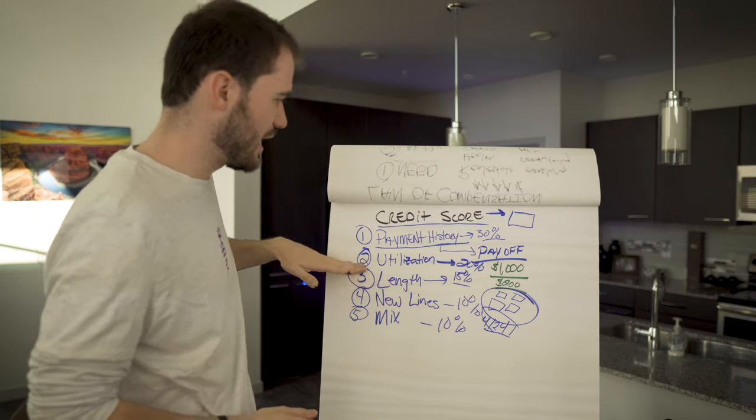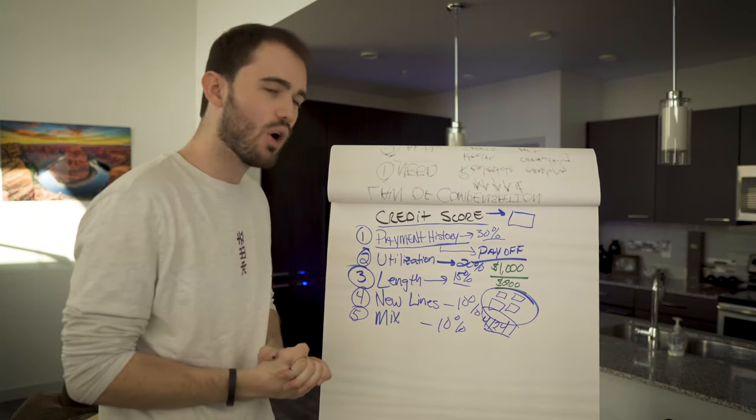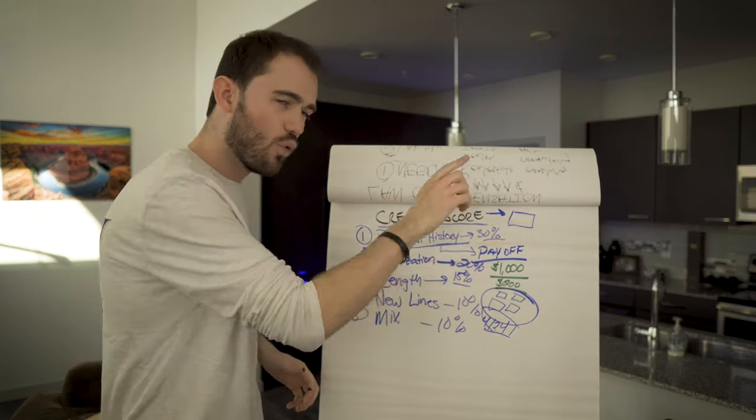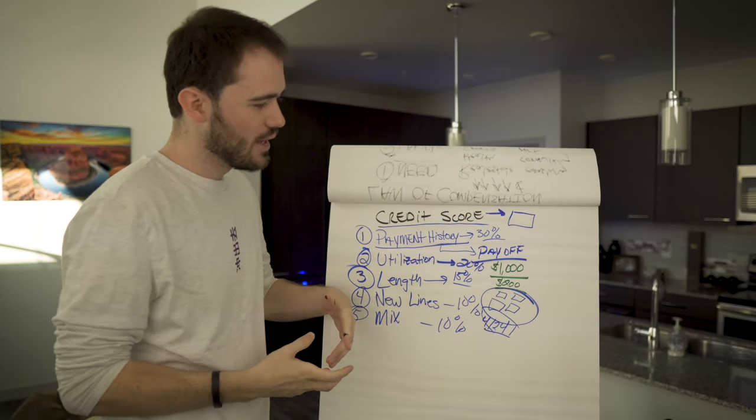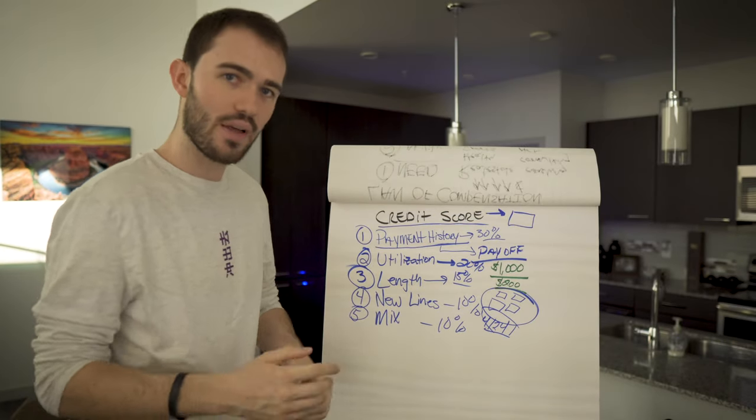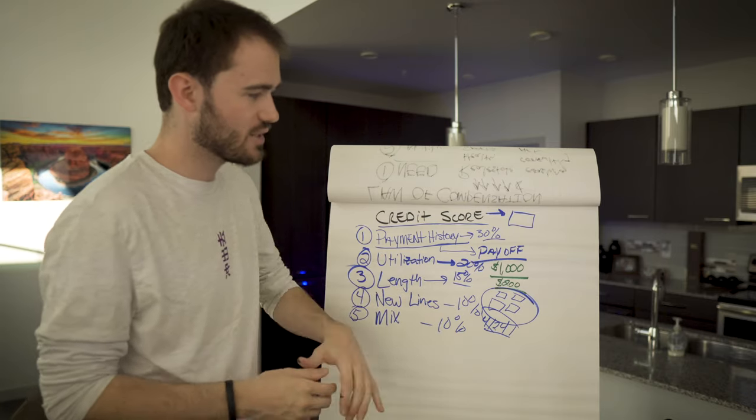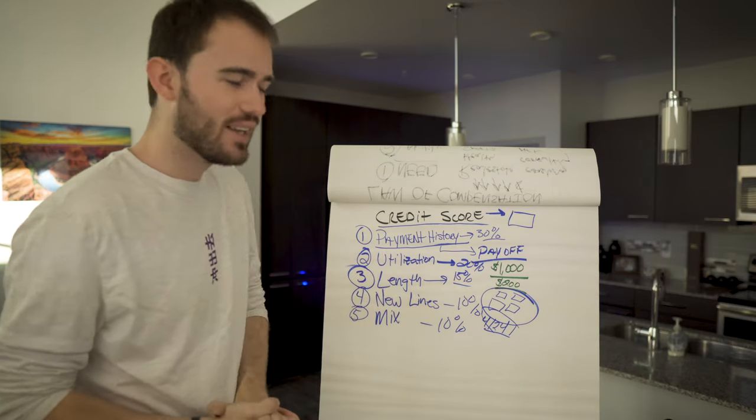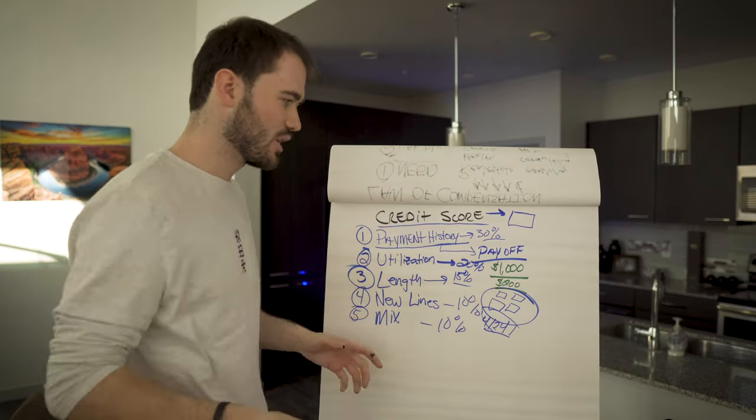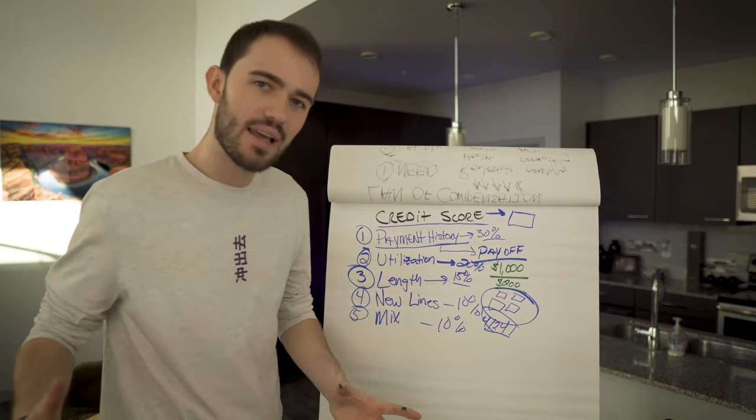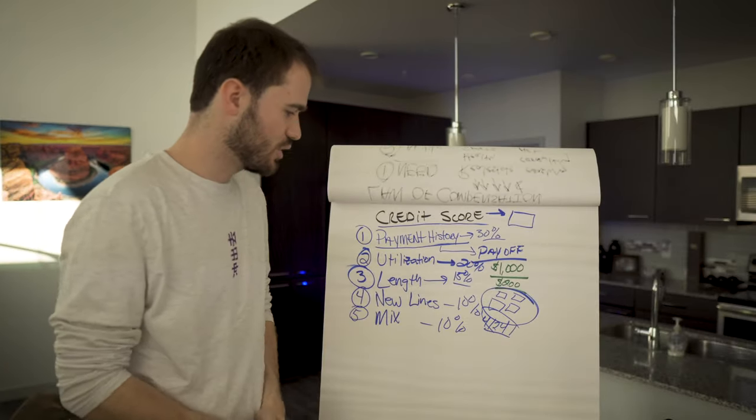And then what you can do is you can actually start to get this utilization lowered. Because if you only have one credit card for a thousand dollars, but you suddenly go out and get four and they all have a thousand dollars now, you have four thousand dollars worth of credit. And that 200 bucks is no longer 25%. That 200 bucks is much less on a percentage scale utilization, and that ultimately will increase your credit score.